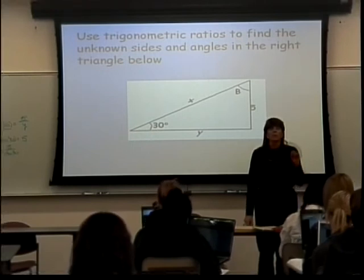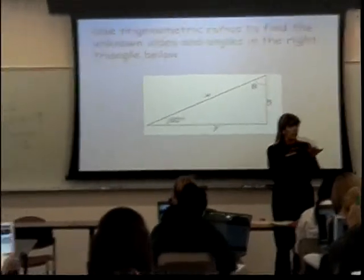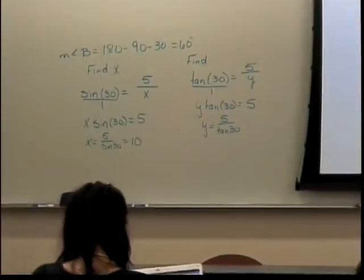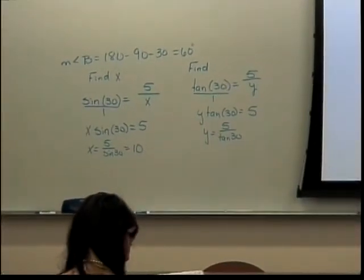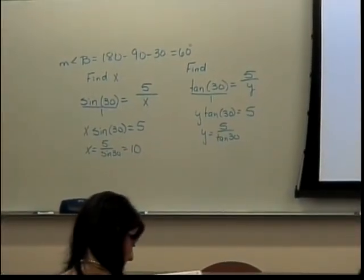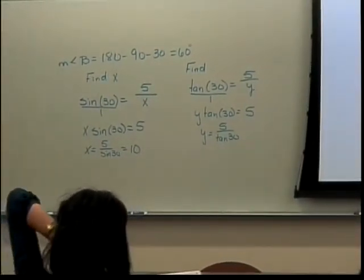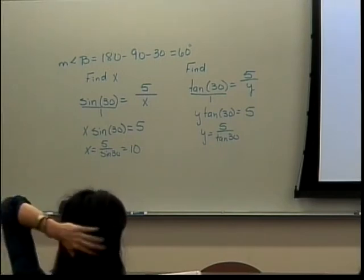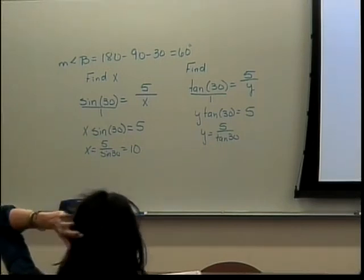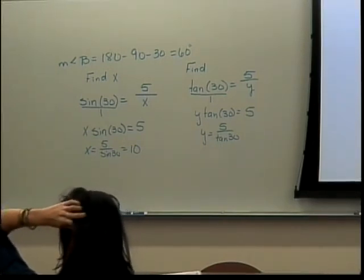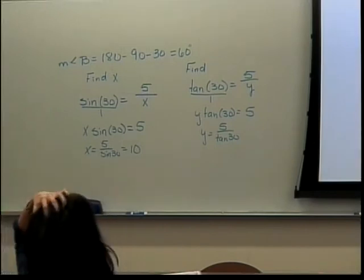Sometimes you're allowed to type exactly what you typed into your calculator into WebWork, but you cannot do that here. WebWork does not calculate in degrees. So if you typed in tangent of 30 into WebWork, it would not calculate correctly — it would calculate as if your calculator were still in radians mode. That's not good for our purposes.